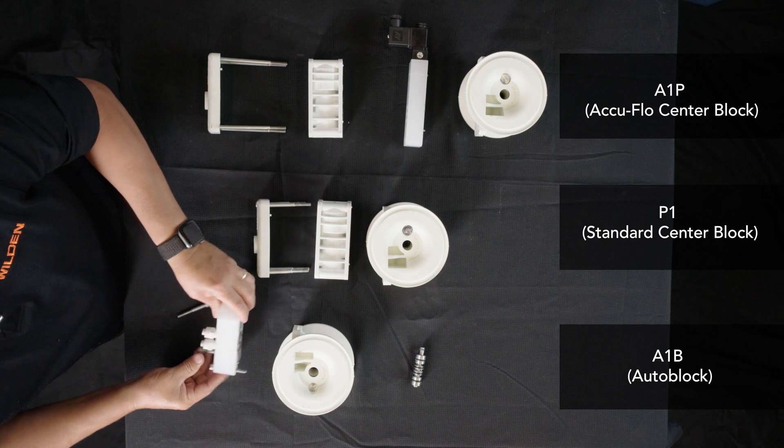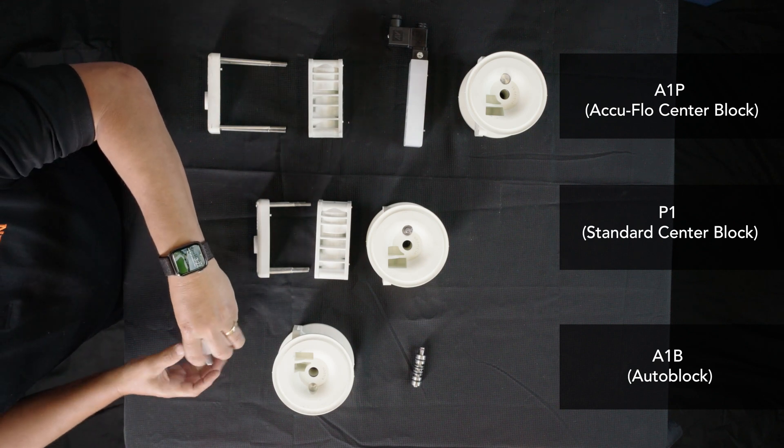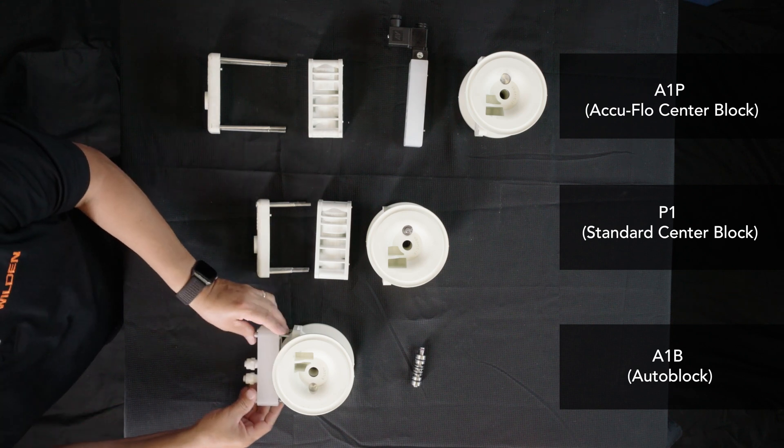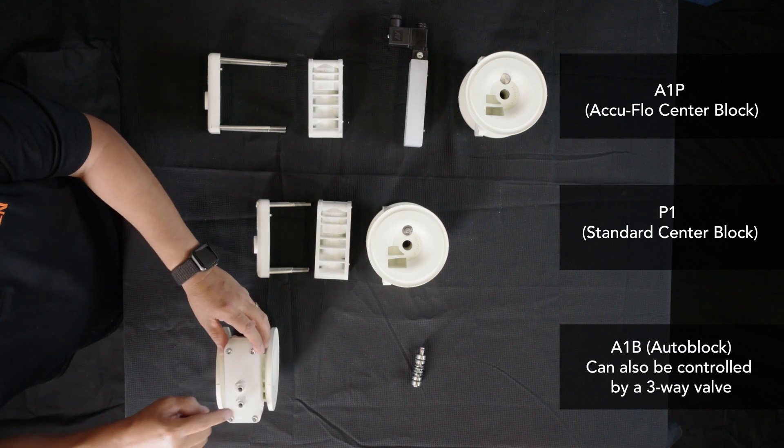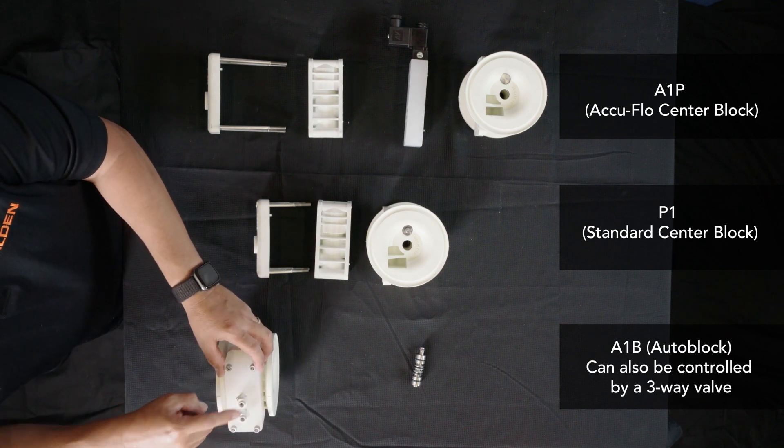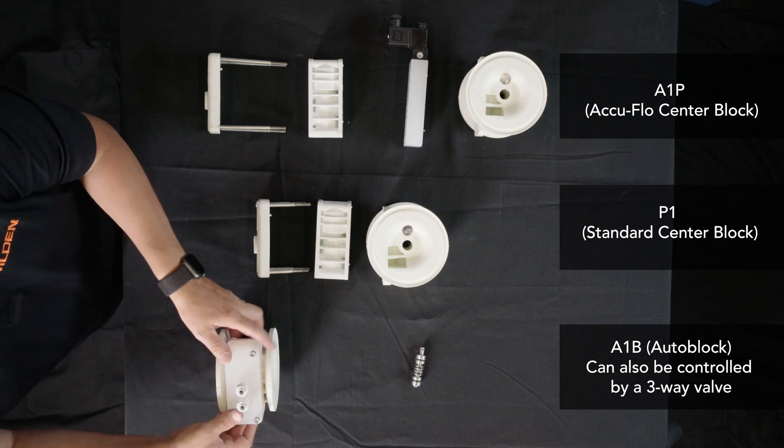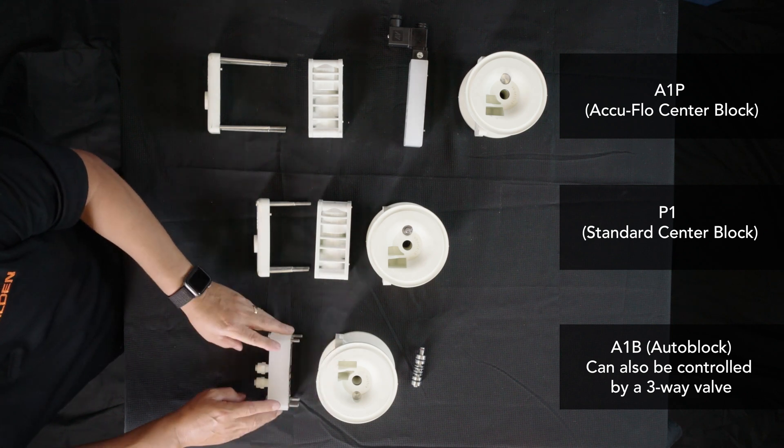Auto block has the same air valve as the standard pump, so same air valve gasket. The block now just has two push-in fittings. That is controlled by a five-way external solenoid valve that pressurizes this port or this port. If it's this port, it goes to that side. If it's this port, it comes to this side. Very simple operation, A1B auto block.